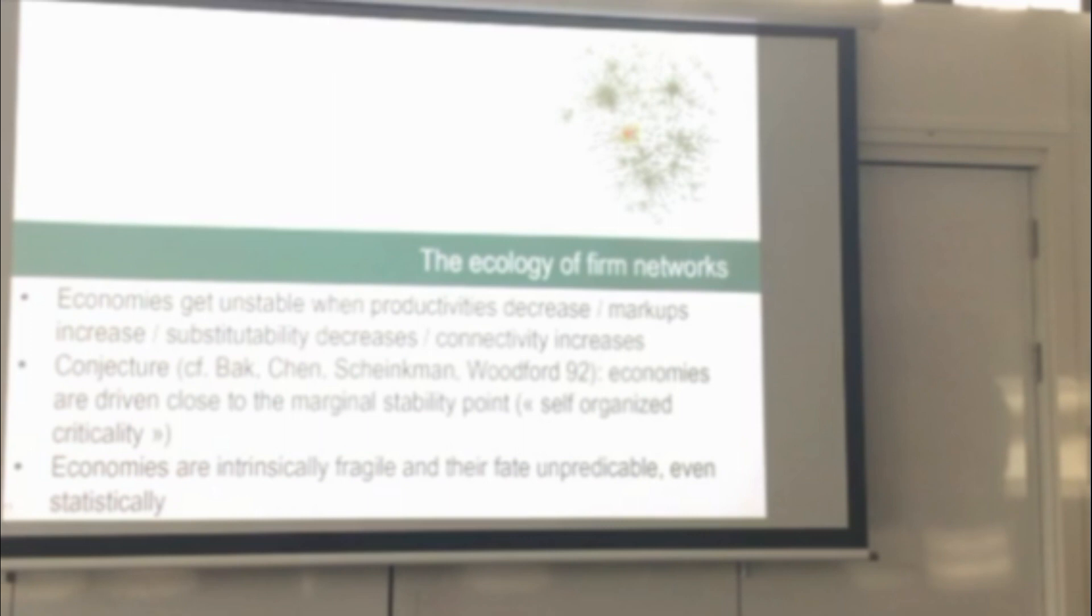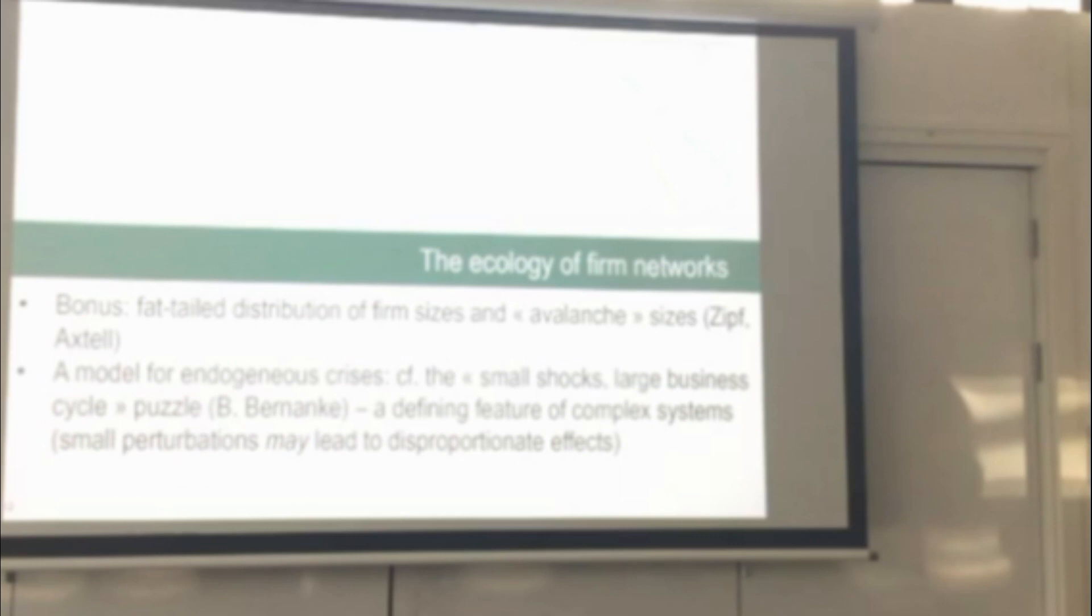So if that's true, it means that economies would be intrinsically fragile and their fate unpredictable, even statistically, because of this complexity. And what's nice about this model is, as a bonus, when these economies are close to this critical point, you get the well-known fat-tailed distribution of firm sizes, the distribution that was, for example, exhibited empirically by Rob Axtell, and the fact that when you have a crisis, it can be either a very small crisis or a landslide where all the firms go bust. So I think it's a very interesting idea of a model for endogenous crises, where nothing fundamental happens, but the economy, in a way, by design, is close to this critical point that generates small shocks like large business cycles, as Bak and Scheinkman was talking about in the 90s. Thank you very much.